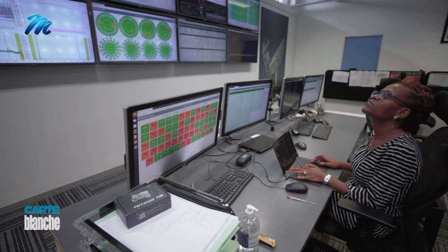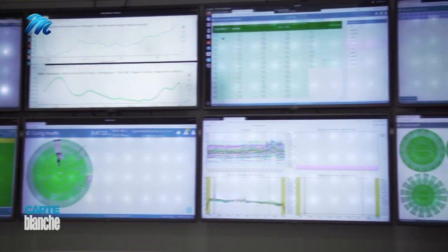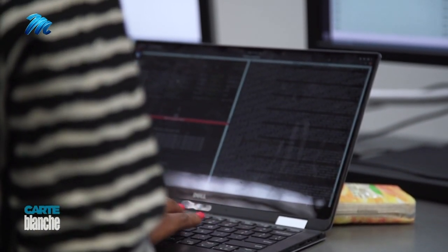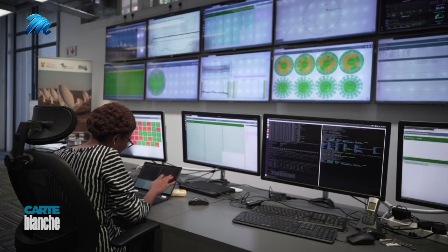Since it became operational in 2018, Meerkat has been in constant use as Clifford Gomedi explains. I've got a group of about 12 telescope operators who work in this control room every day, 365 days a year, 24 hours a day, working in shifts, so the telescope is always operational. The telescope operator sits in this room and uses these keyboards to actually control the telescope, so you can see from these screens what the telescopes are doing.